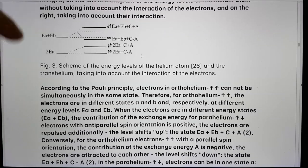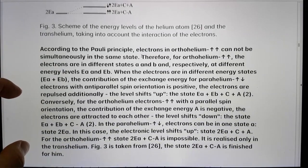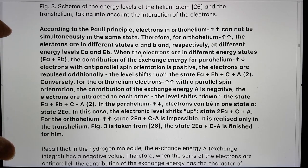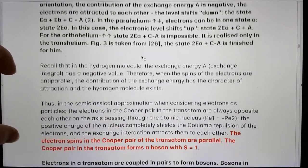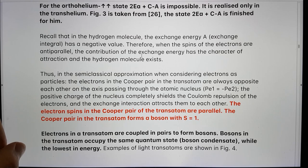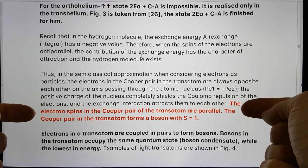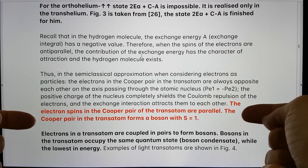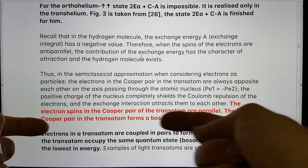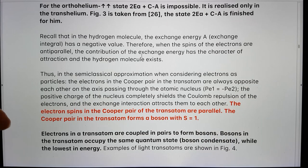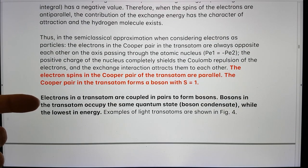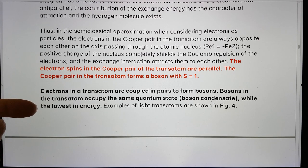So this goes into more and more detail. But here is the key takeaway. The electron spins in the Cooper pair of the transatom are parallel. The Cooper pair in the transatom forms a boson with S equals 1. Electrons in the transatom are coupled in pairs to form bosons. Bosons in the transatom occupy the same quantum state, boson condensate, Bose condensate, while the lowest in energy.